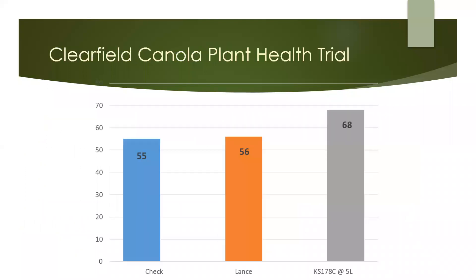Here's a field trial done on Clearfield Canola that used 178C versus Lance, and a check strip where there was a gain of 12 bushels an acre.